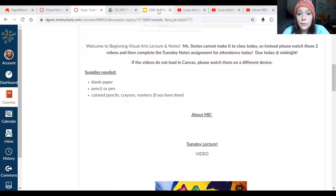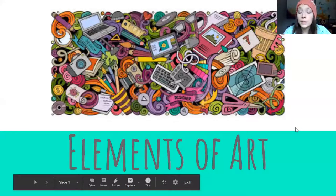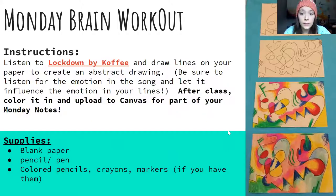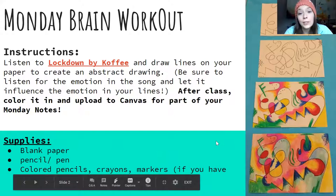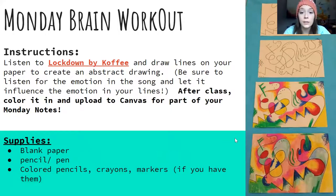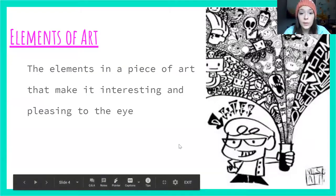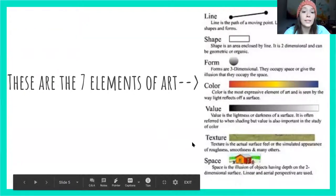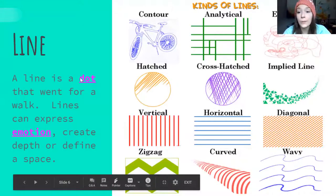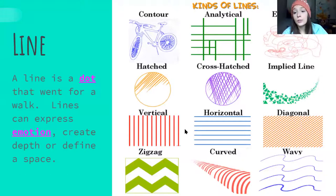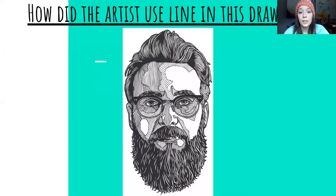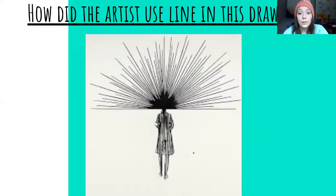Today we're going to continue talking about lines. If you missed yesterday, remember we were talking about the elements of art. We also did a cool little activity which we're going to do today to a different song and a different artist. The elements of art are things that make your artwork more interesting — there are seven different ones, but we're starting with line. Lines are used to show emotion and direct your eye in a certain way. They can be used to show something recognizable like a face, or to draw your eye towards a spot where all the lines meet.